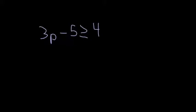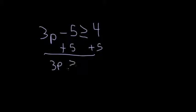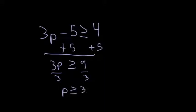Now I have 3p minus 5 is greater than or equal to 4. First step: get rid of that subtraction. I'm going to add 5 to both sides. So I get 3p is greater than or equal to 4 plus 5, which is 9. Now I've got to divide by 3 on both sides. So p is greater than or equal to 9 divided by 3, which is 3.